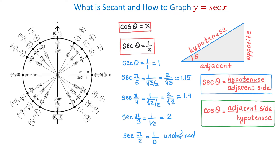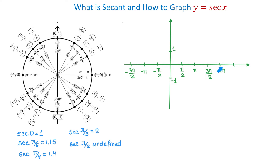Now let's talk about the trigonometric function y equals secant of x, where x is the independent variable representing angles in radians, and y is the dependent variable representing the values of the secant function. To graph it, we start with a rectangular coordinate system, plotting the angles in radians along the x-axis. At the points where the function is undefined, like pi over 2 and 3 pi over 2, the graph will have vertical asymptotes.